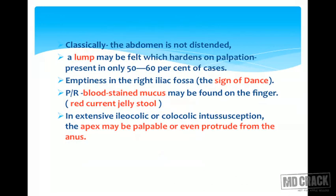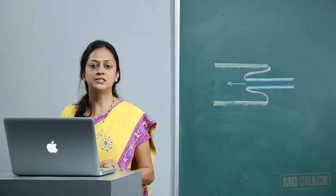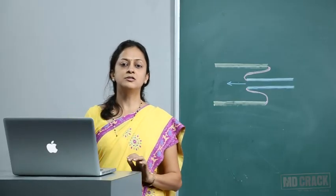Between episodes the child remains lethargic. Examination should be done between episodes. Classically the abdomen is not distended. A lump may be felt which hardens on palpation, present in only 50–60% of cases. Emptiness in the right iliac fossa is called the sign of Dance. On per rectal examination, blood-stained mucus will be seen.